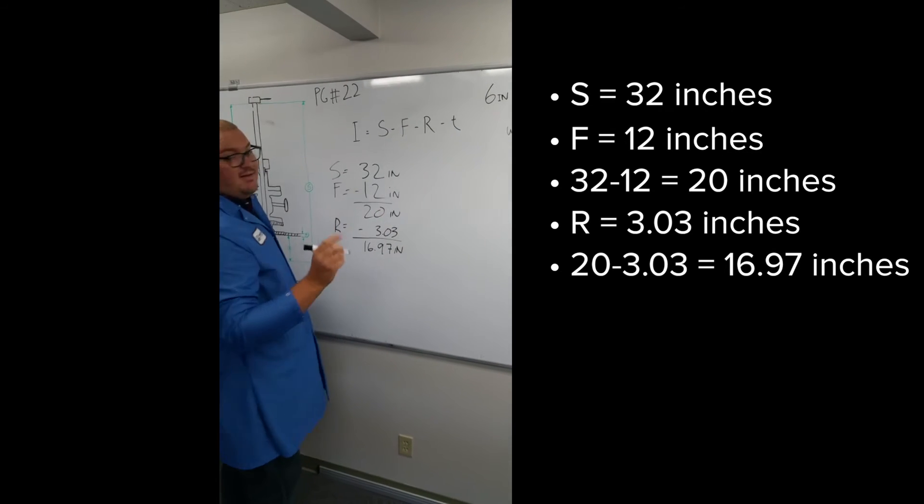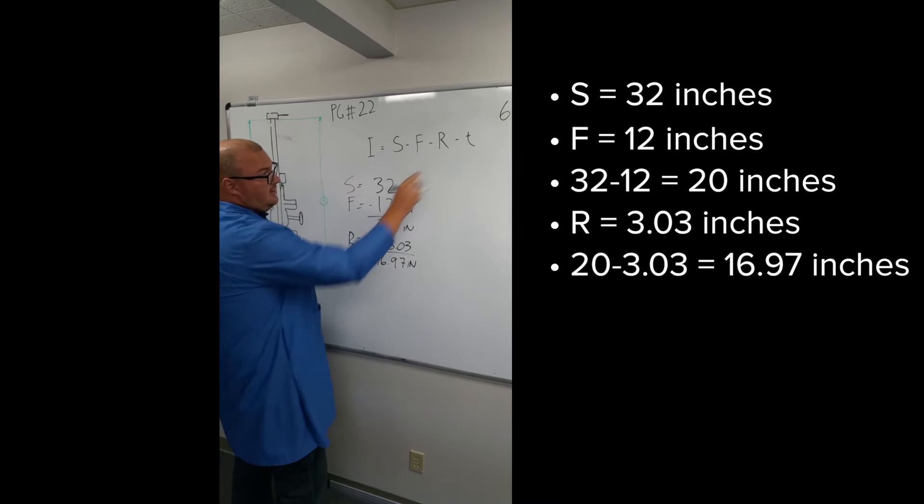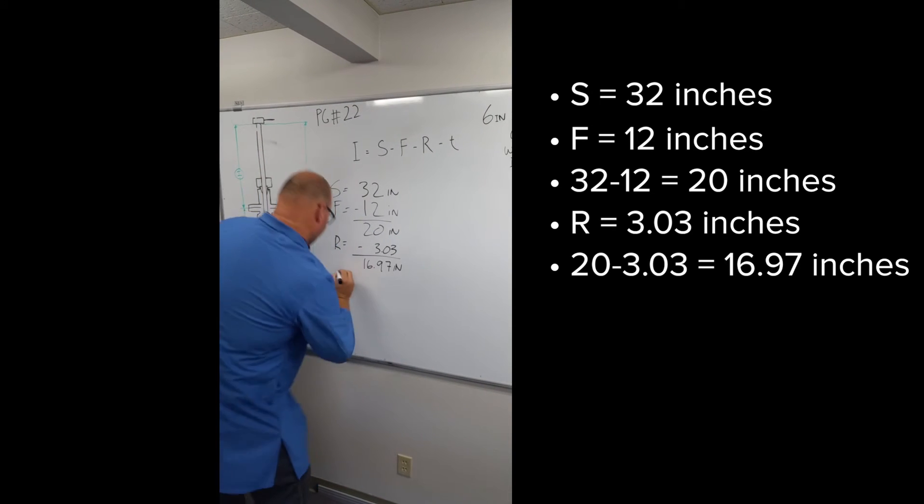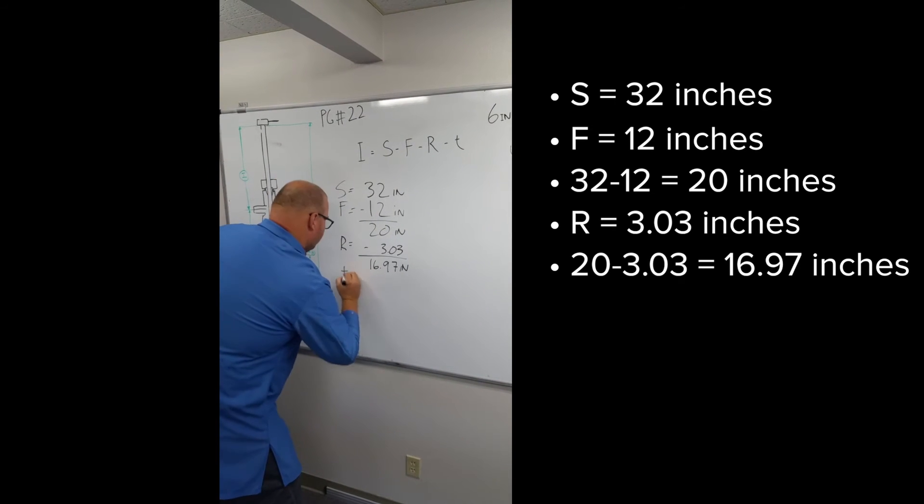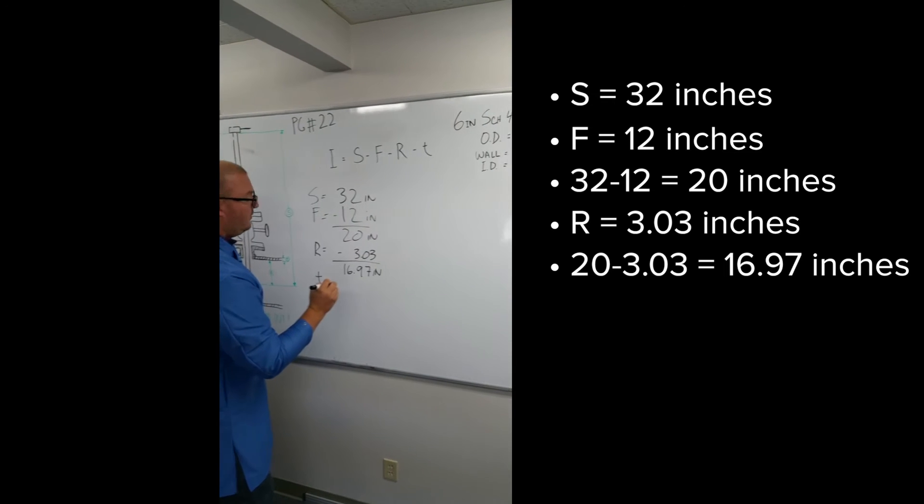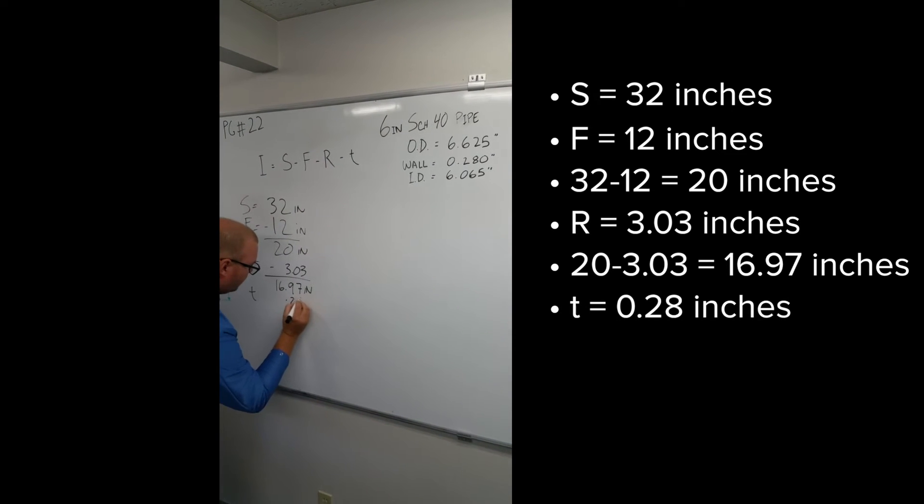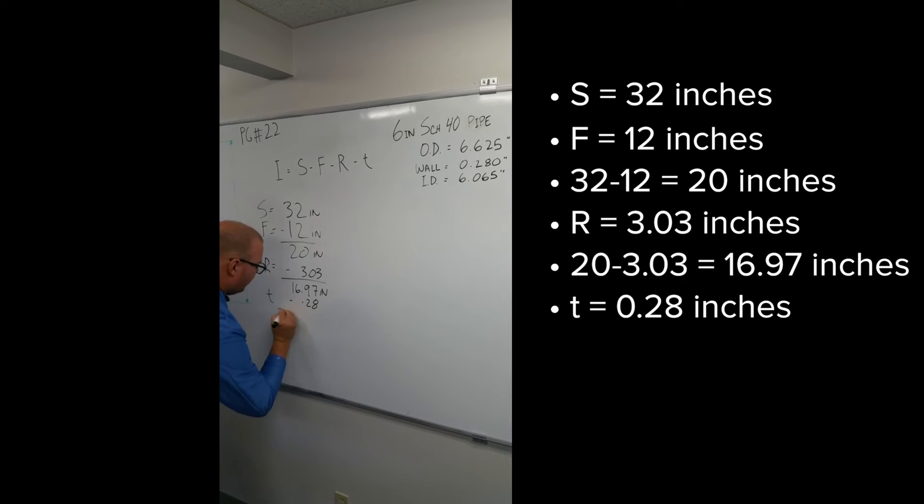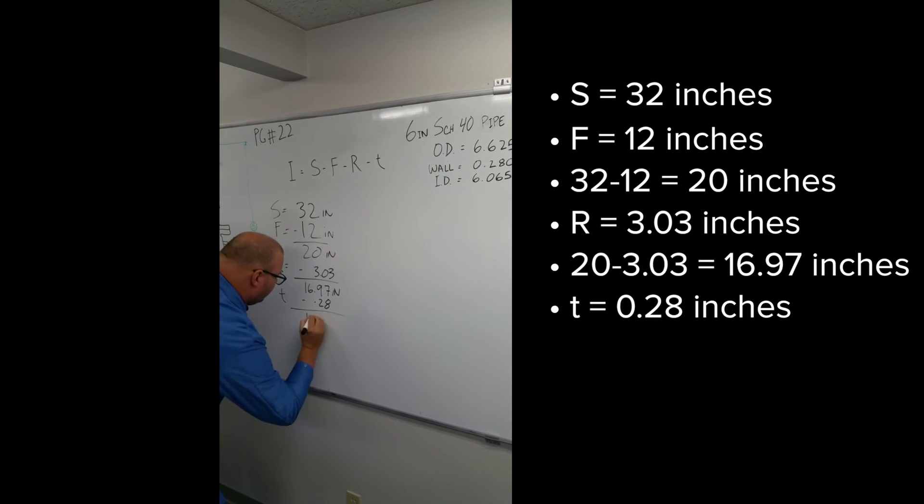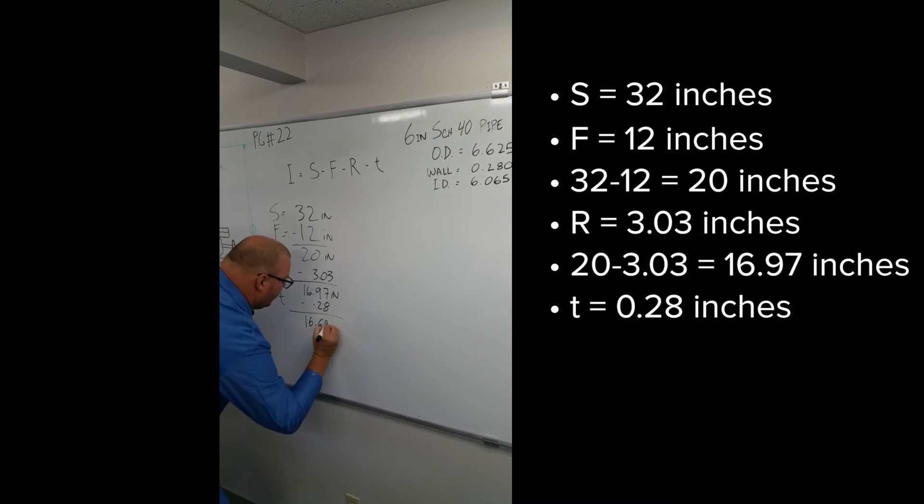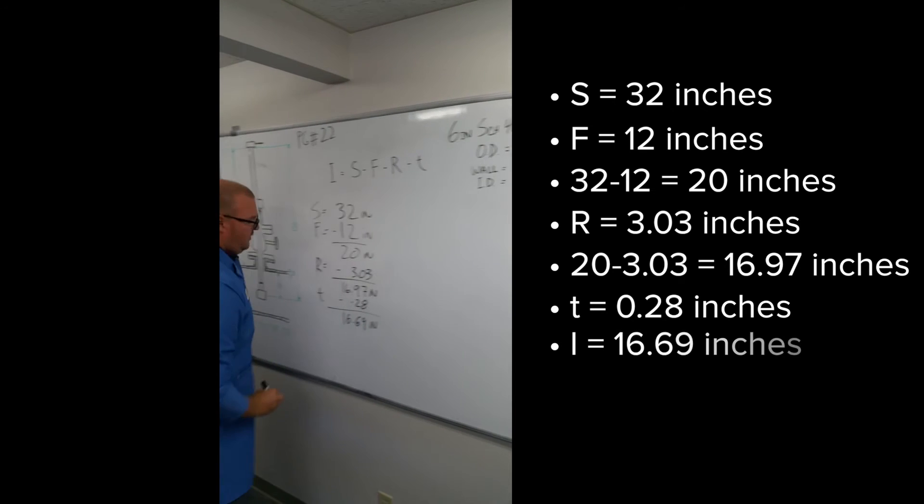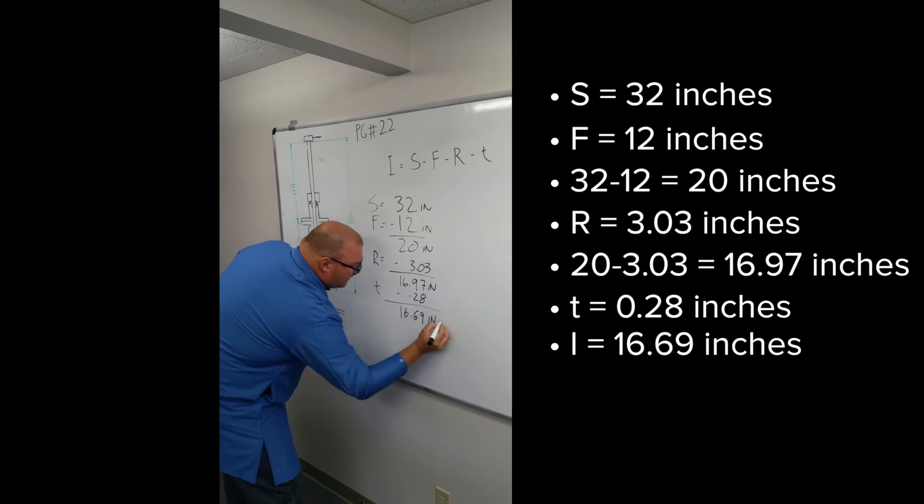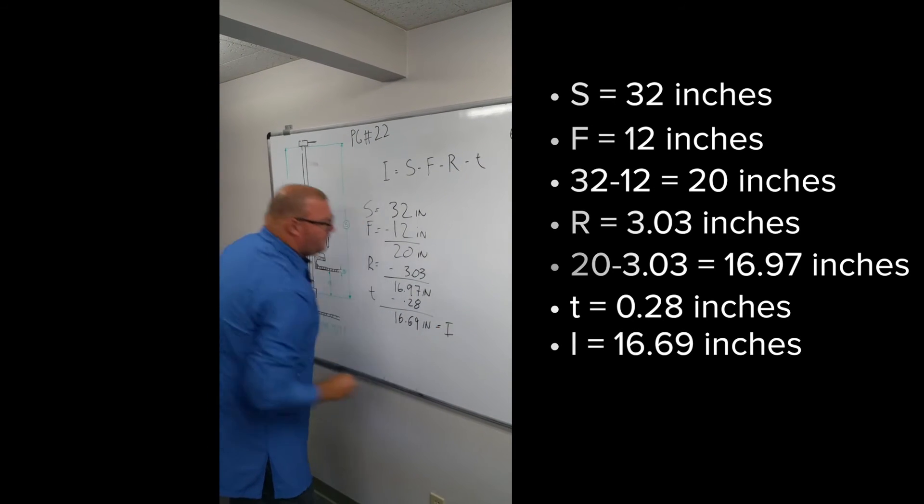We're almost finished. The last thing we need to do for our formula is subtract the wall thickness. T is equal to .280. Subtract that and we're left with 16.69 inches. And that is what I equals. That's our insertion depth.